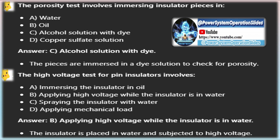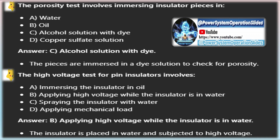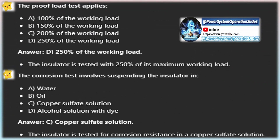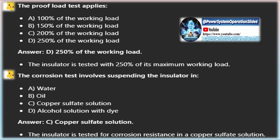Defective insulation material: if the insulation material is defective, it is prone to failure at its weakest point. Porosity in insulation materials: low-temperature manufacturing can make porcelain insulators porous, causing them to absorb moisture from the air. This reduces insulation effectiveness and allows leakage current, leading to failure. Improper glazing on insulator surface: poor glazing allows moisture and dust to create a conductive path, reducing the flashover distance and increasing the risk of failure.